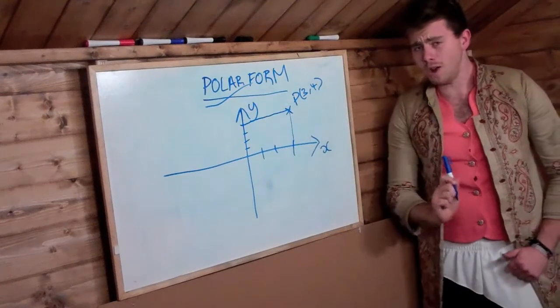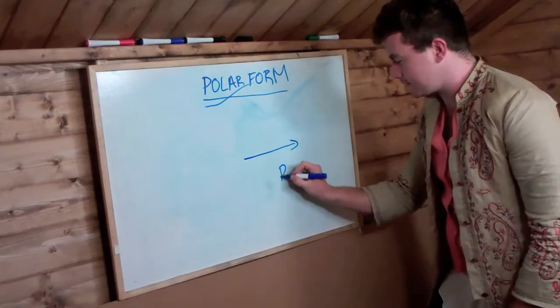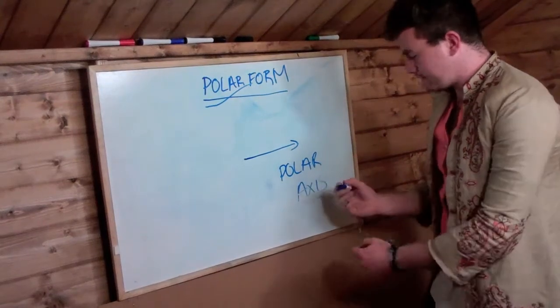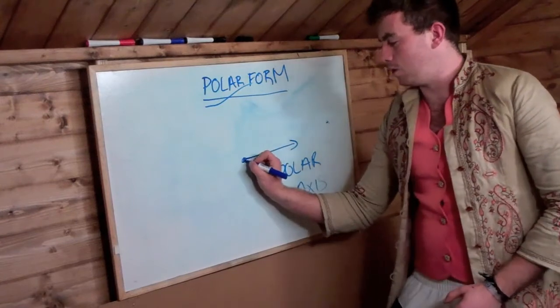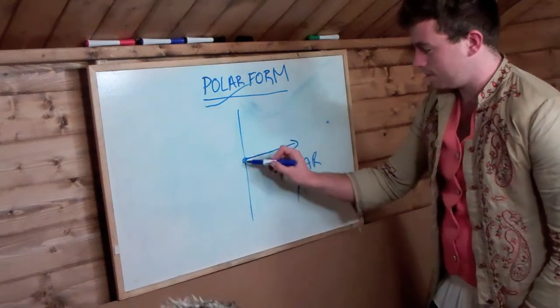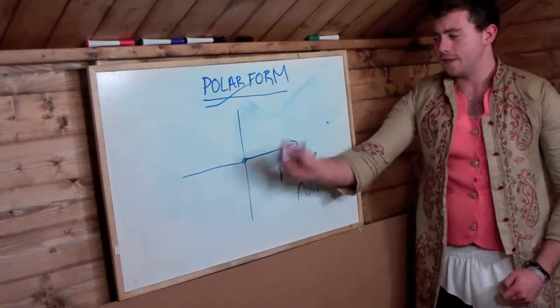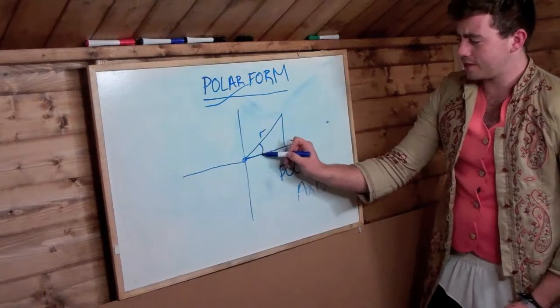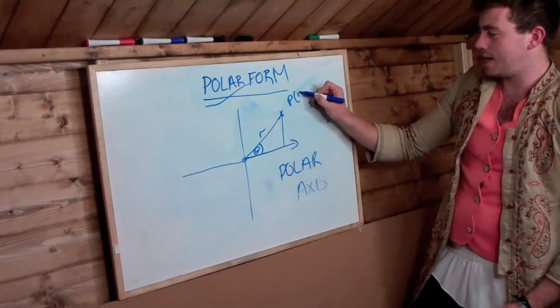But in polar form, or polar coordinates, you have the polar axis, and instead of the origin, you have the pole. Now, if we wanted to draw a point on the polar coordinate system, instead of going along here and above, along here, you use this length r and this angle theta. So point P would be r theta.